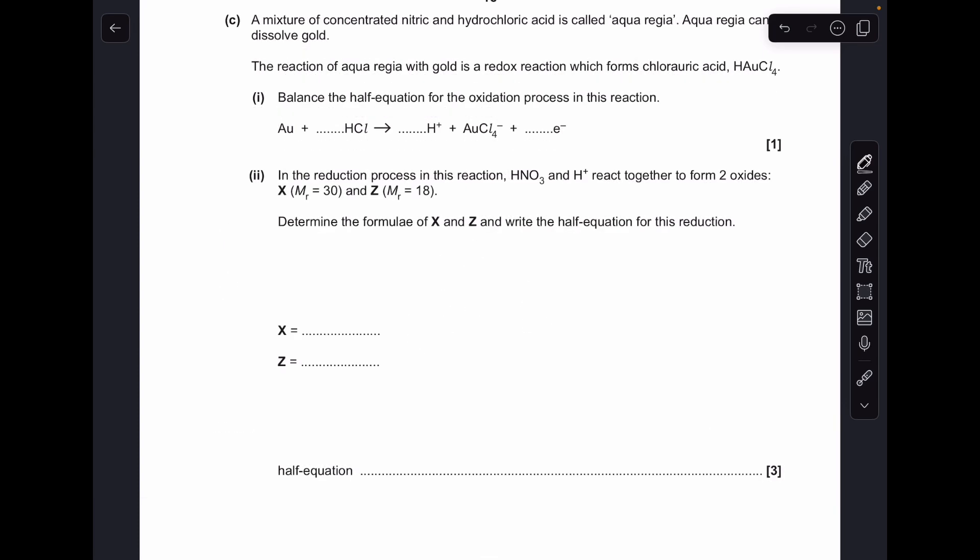Moving on to part C, so the first thing I want to balance is the chlorines by putting a four in front of the HCl. That means I need a four in front of the H plus. And then for the electrons, we can either use the change in oxidation number, so gold's gone from zero up to plus three, so it's lost three electrons. Or you could just base it on the overall charge left and right. We've got no charge on the left overall, we've got four plus with one minus so three plus, so we need three electrons to get that down to zero charge overall on the right.